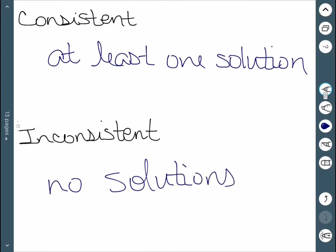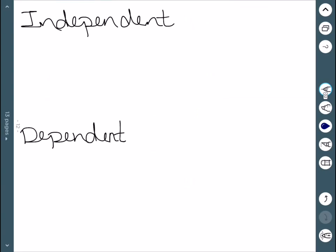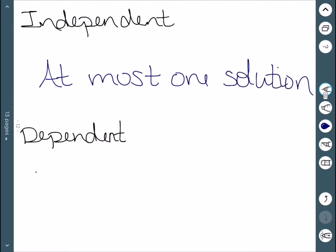A couple more. Independent would be at most one solution, so zero or one. And dependent would be infinite solutions.